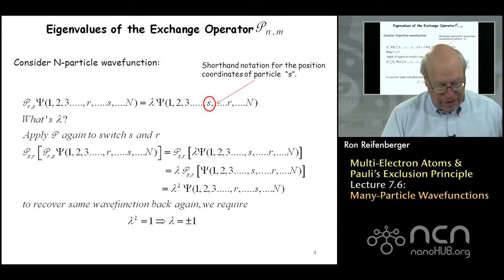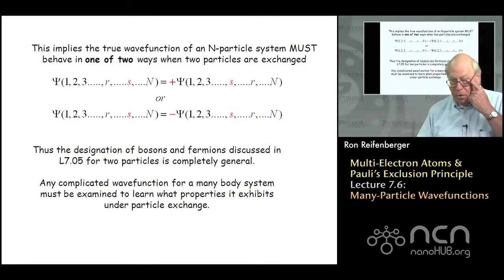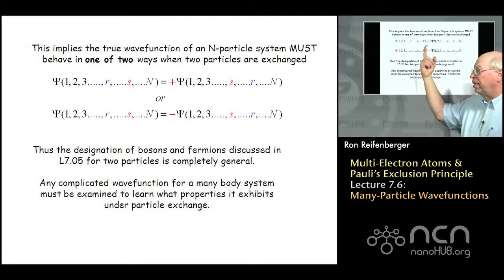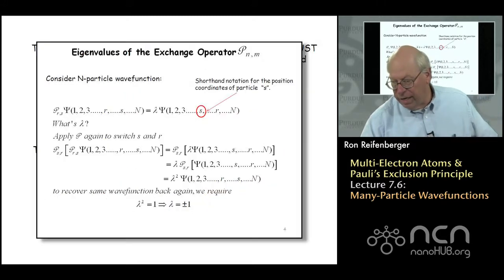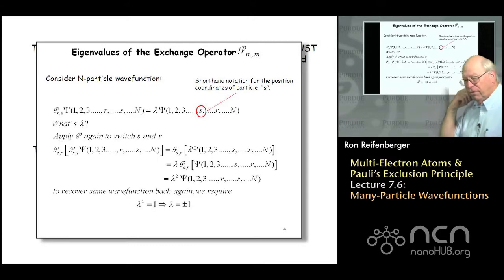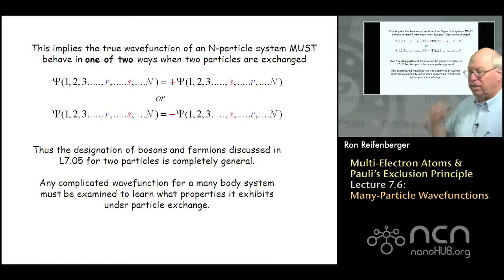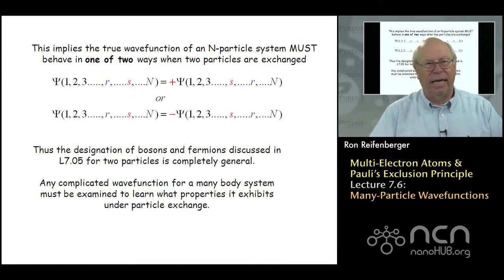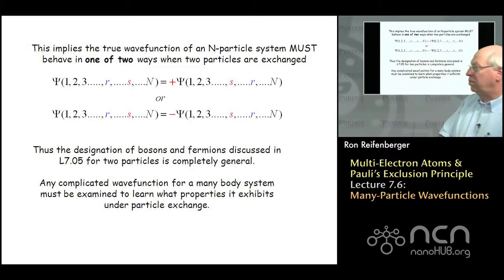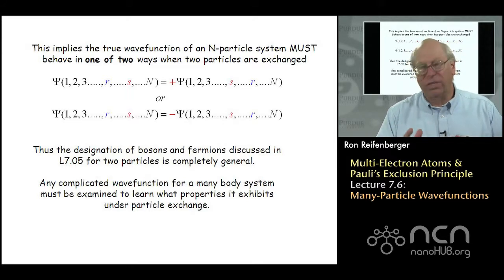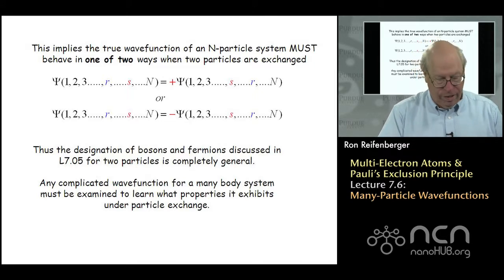So we get essentially the same condition that we had for the two-particle wave function. It's a completely general result. There are two possibilities, and the two possibilities for writing the wave function are associated with the two roots of this particular equation for lambda squared. So we have the situation where under particle exchange the wave function comes back to itself again with a positive sign, or under particle exchange the wave function comes back to itself with a negative sign. This class of particles called bosons and fermions that we uncovered just discussing the two-electron case, that's completely general and it applies to these n-particle wave functions.